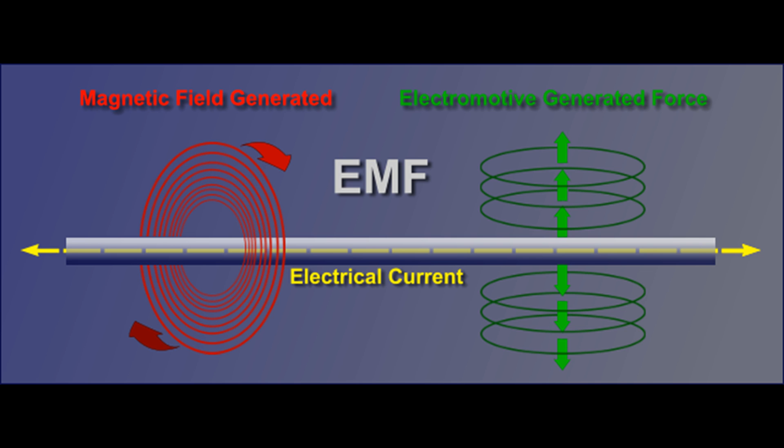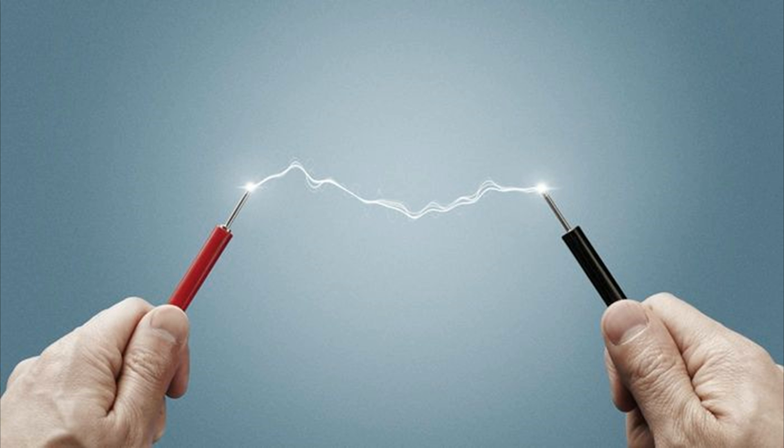A device that converts other forms of energy to electrical energy supplies an EMF to a circuit. The word force in this case is not used to mean mechanical force, measured in newtons, but a potential, or energy per unit of charge, measured in volts.